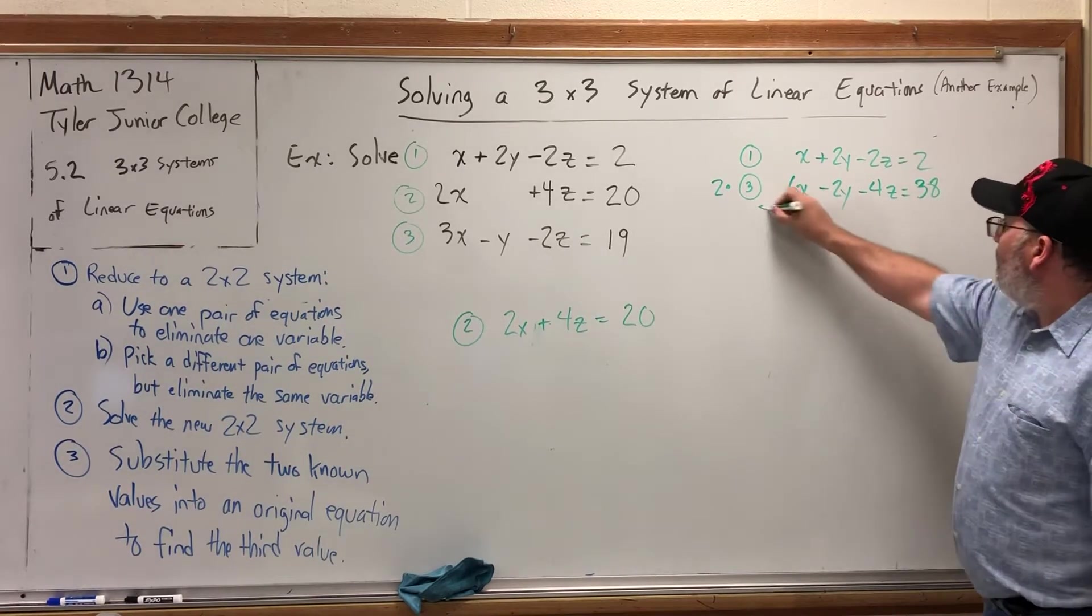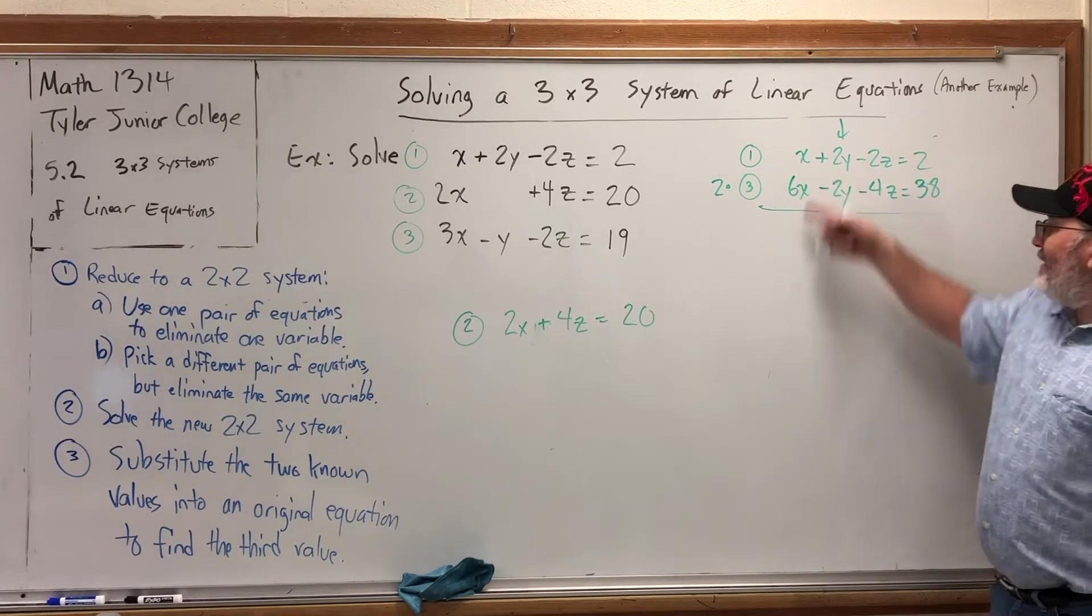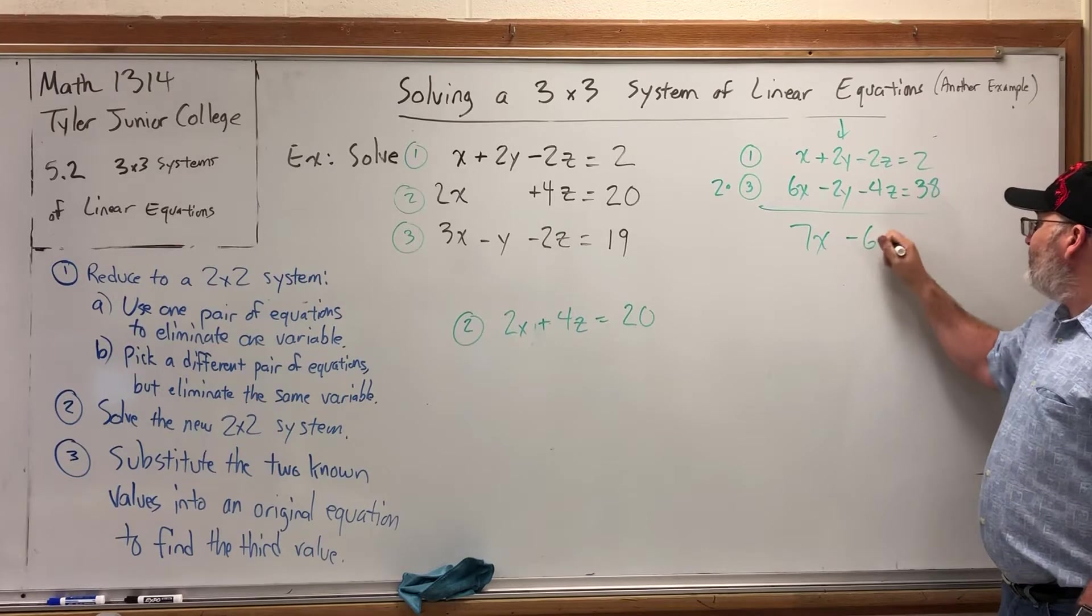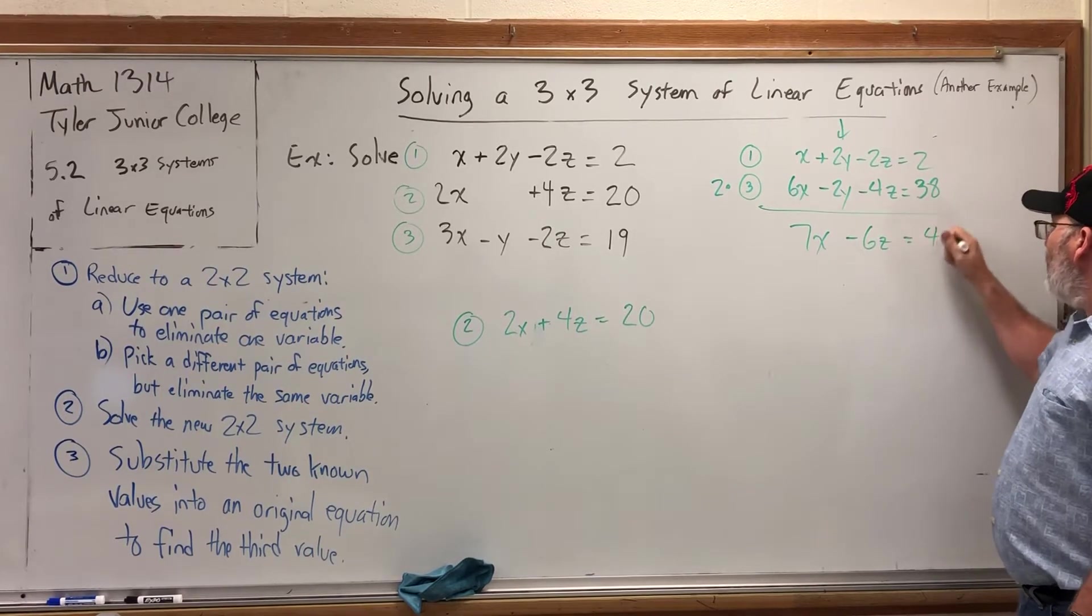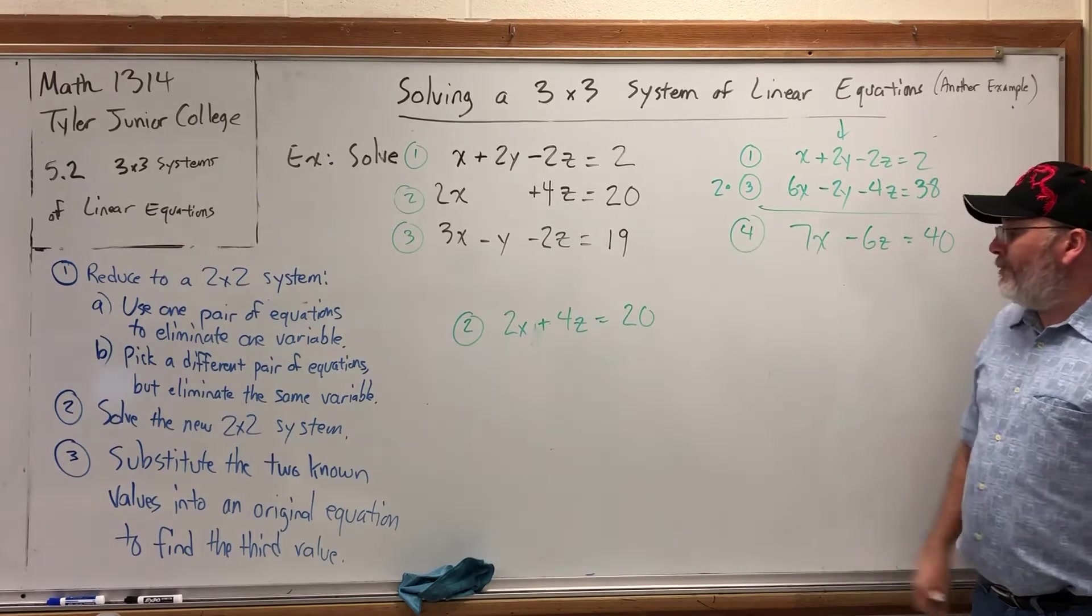At this point, the y's are ready to cancel. And if I add my equations, I get 7x, no y's, negative 6z equals 40. We'll call that equation 4. It's our first new equation.